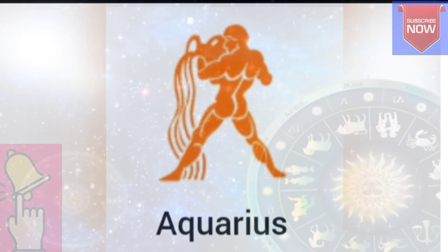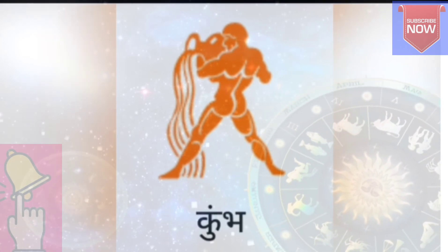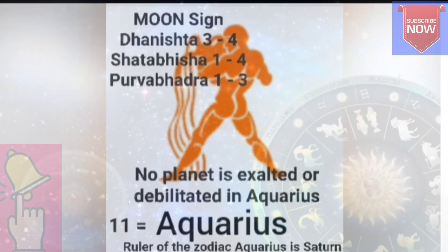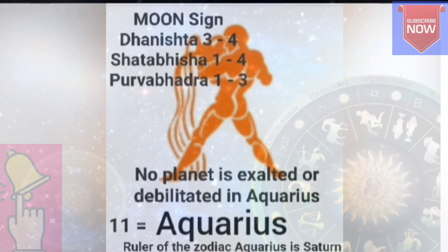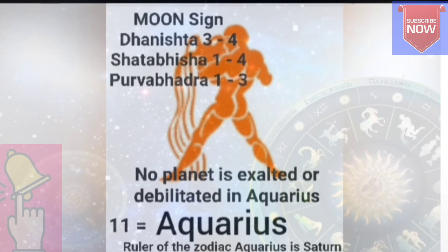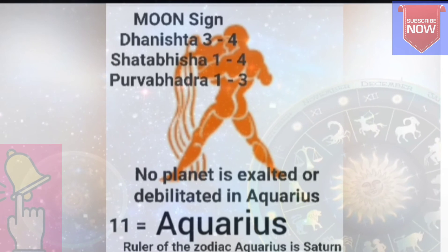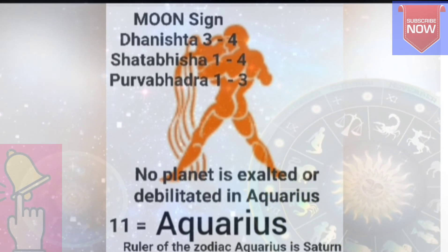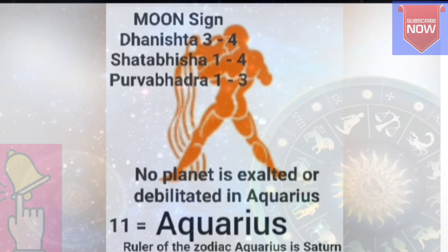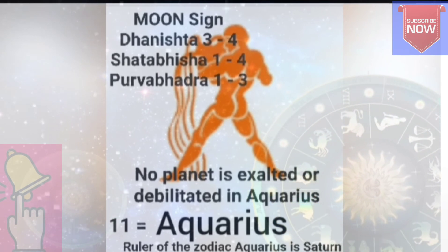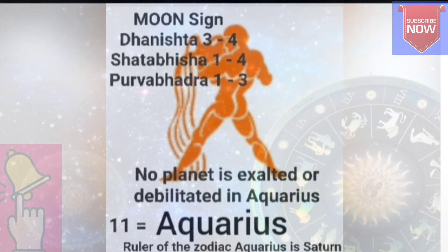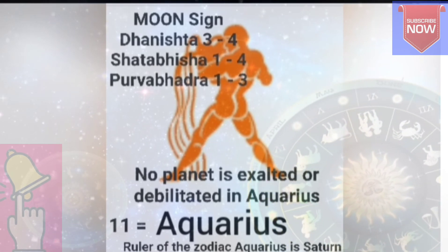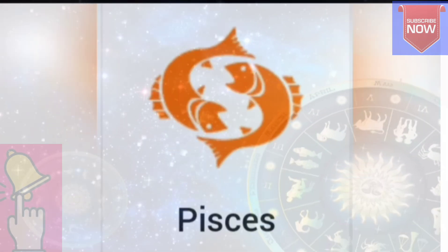Aquarius, number 11, is called Kumbha in Hindi. This Rashi is ruled by Saturn. No planets are exalted or debilitated in this Rashi. The nakshatras are: Dhanishtha 3 and 4 Pada, Shatabhisha 1, 2, 3, and 4 Pada, and Purva Bhadrapada 1, 2, and 3 Pada.